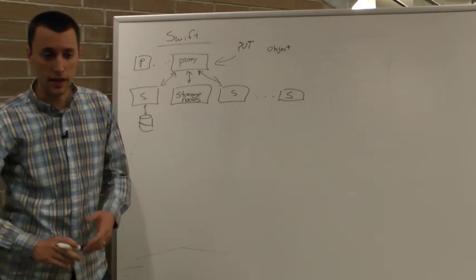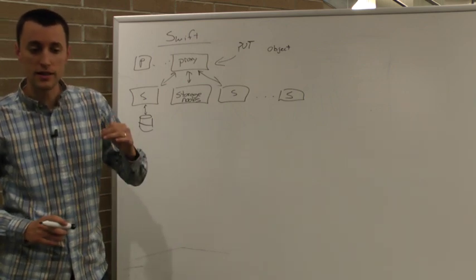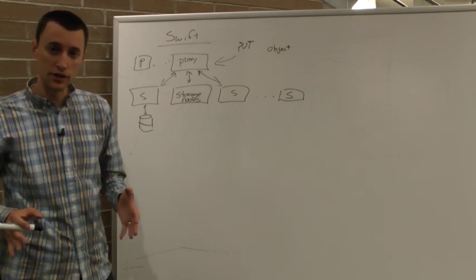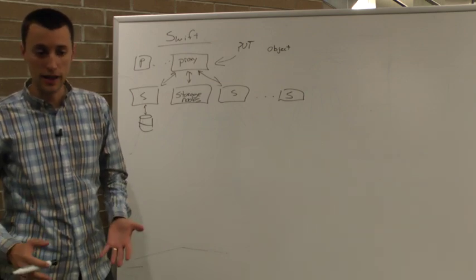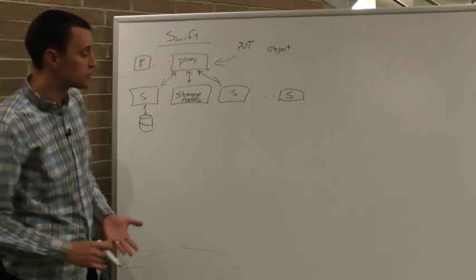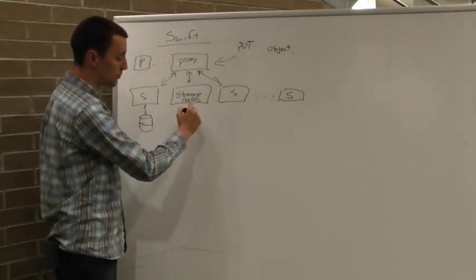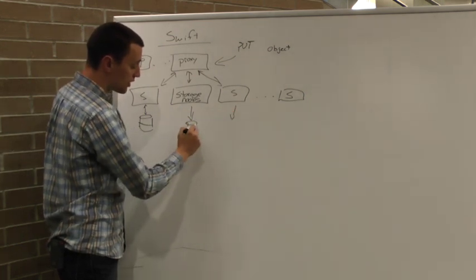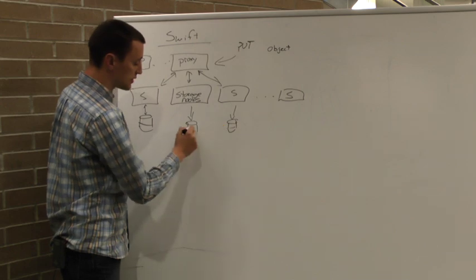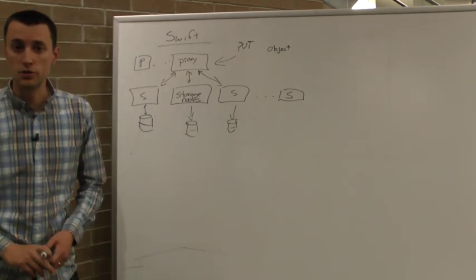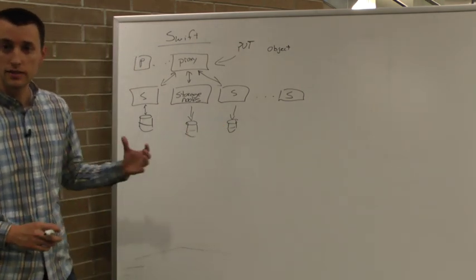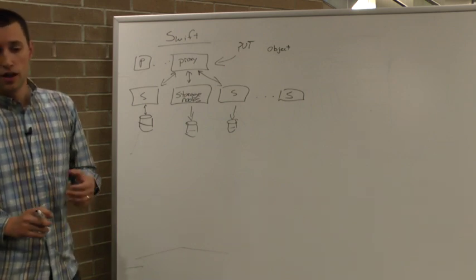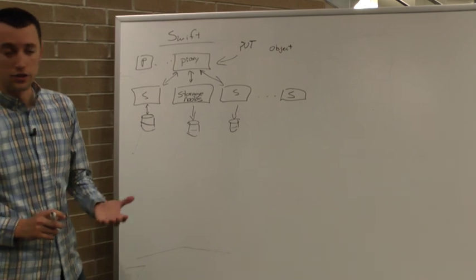Swift is a replicated based system and what that means is that all the data inside of it will be stored multiple times to assure very high availability and durability. By default, we recommend that you use three replicas, which means that then the proxies will be talking to three different storage nodes. And the client will never get a successful response to a write request unless at least a majority of these have been successfully written down to disk. This gives you the confidence of having very high durability in your system.